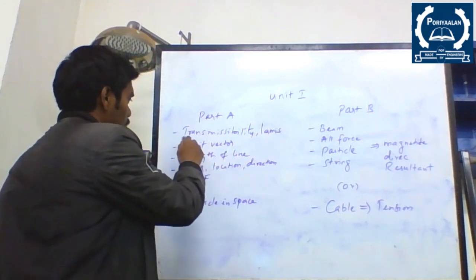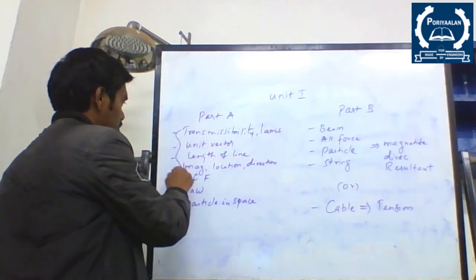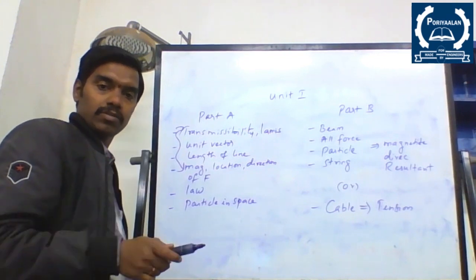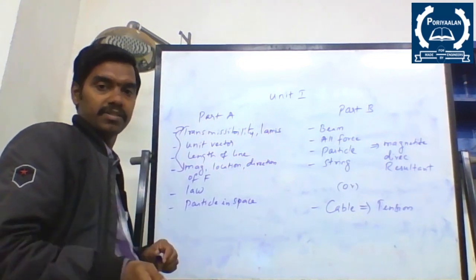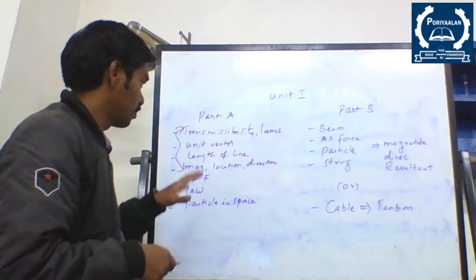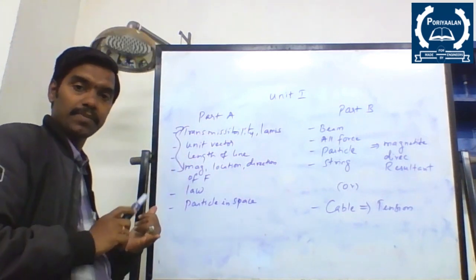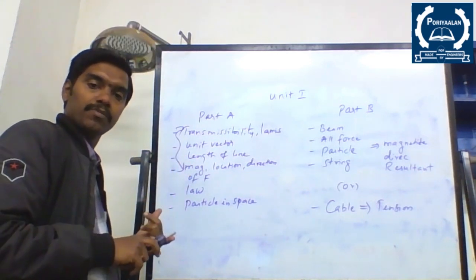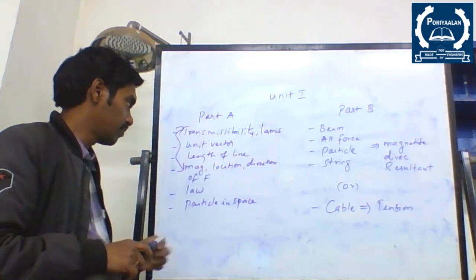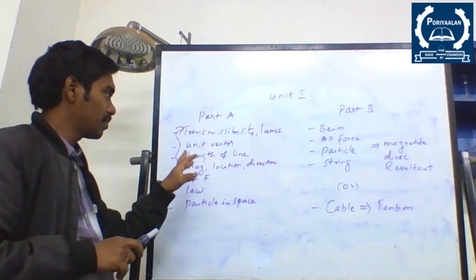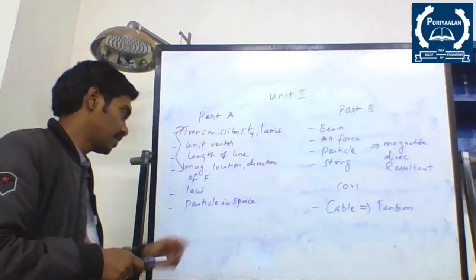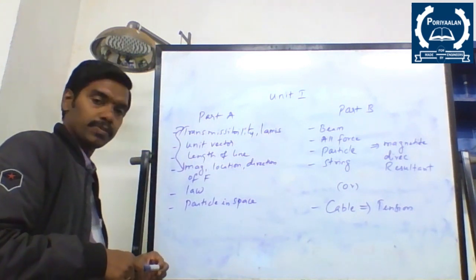In Unit 1, Part A, you will get two questions. The repeated two questions will always be available — only the diagrams and notations will differ, but the problems will remain the same. Generally, you are going to study the different types of laws. Simple diagrams will be given and you are going to identify the force magnitude and direction for the corresponding diagram. Sometimes unit vector problems will be given, sometimes length-of-line problems, and the last one will be particles in space.